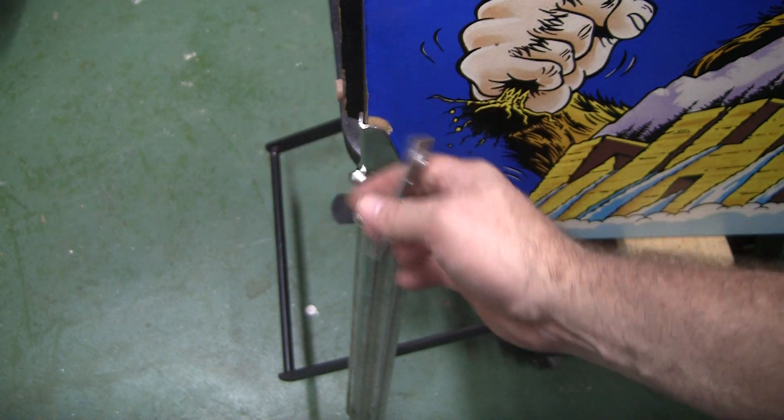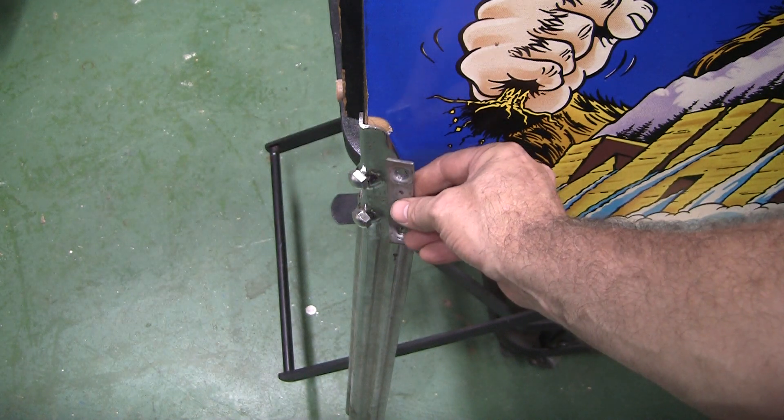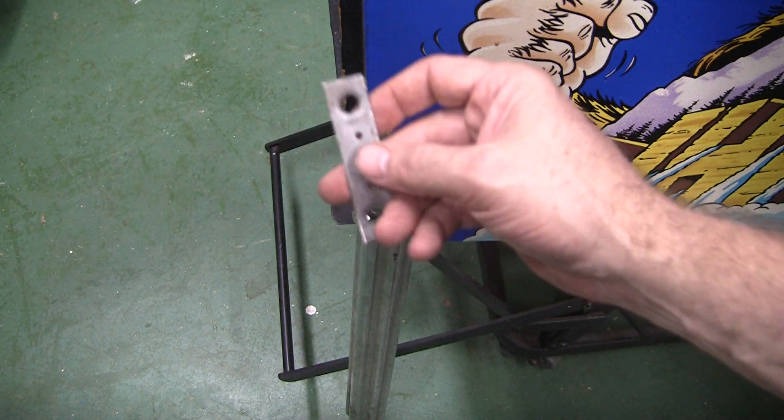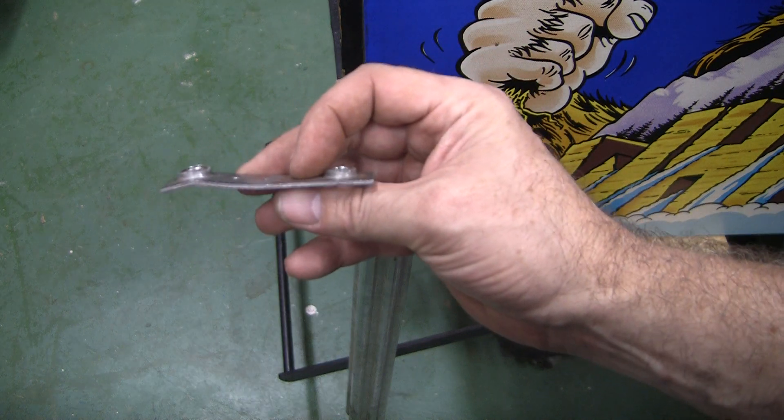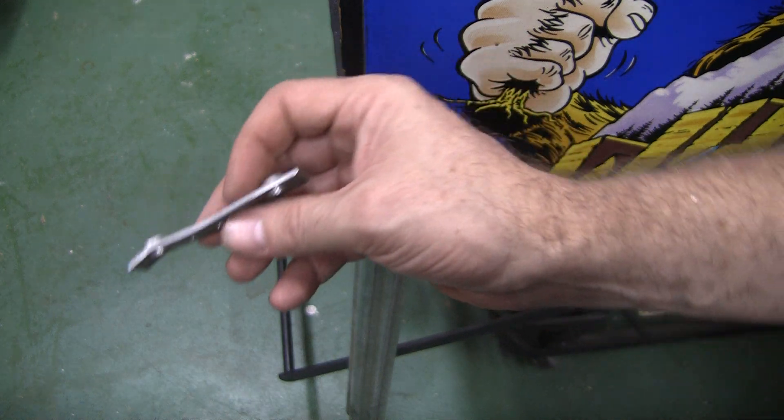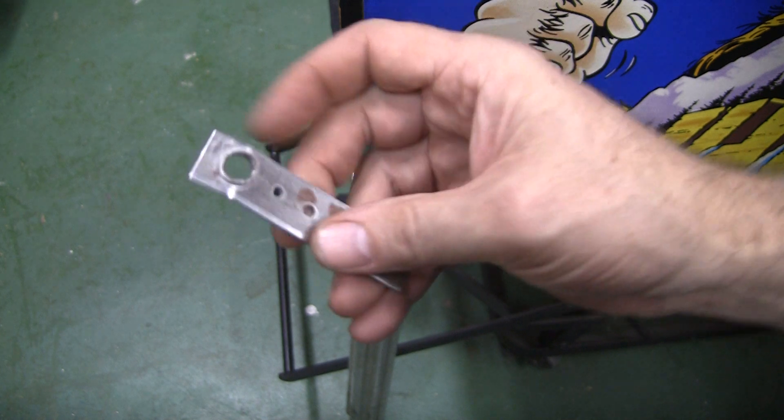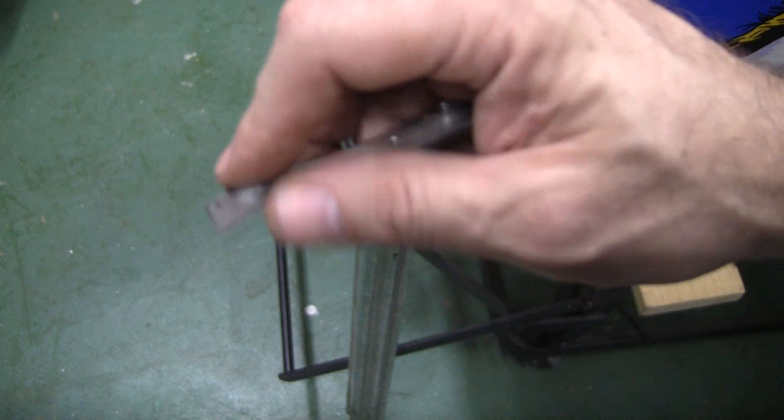And so this basically is on the other side and these things screw into them. And you can see it's a pretty flimsy little metal piece. Look, this has been bent from being torqued into it too much. So the threads in here are stripped and it's ruined.